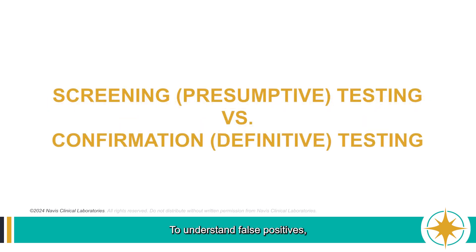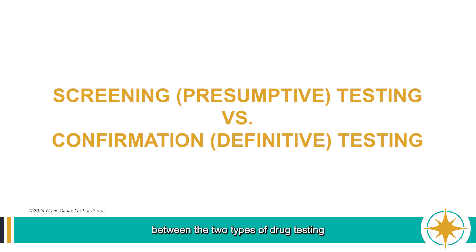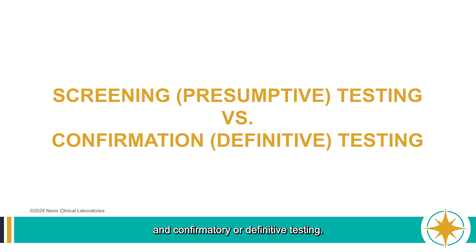To understand false positives, we first need to understand the differences between the two types of drug testing we perform: screening or presumptive testing, and confirmatory or definitive testing.